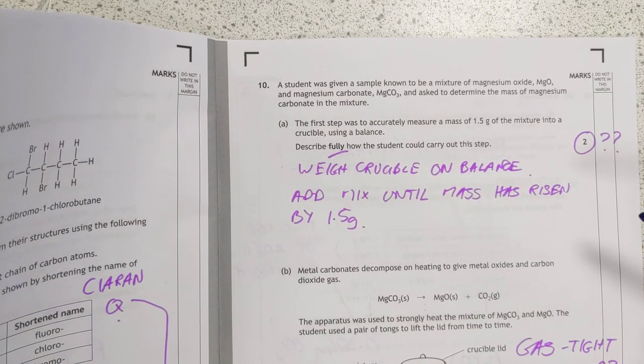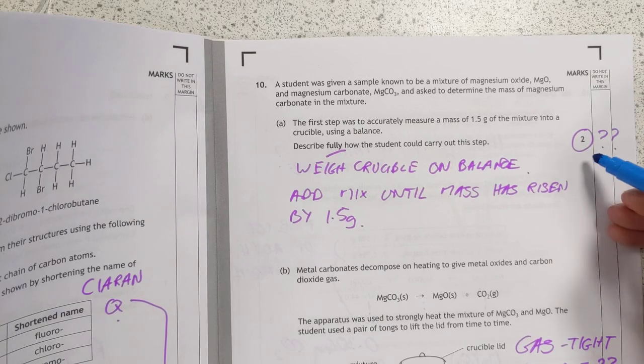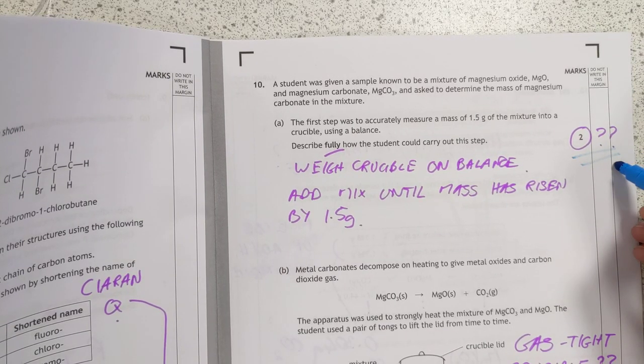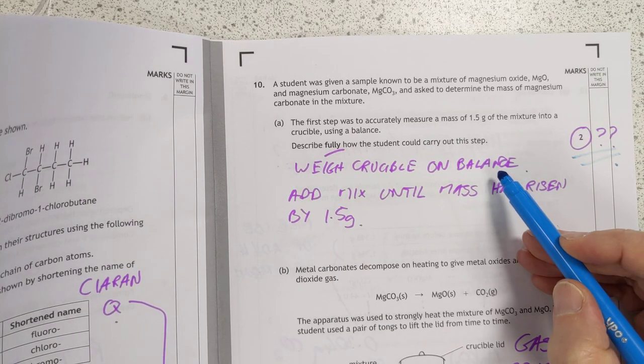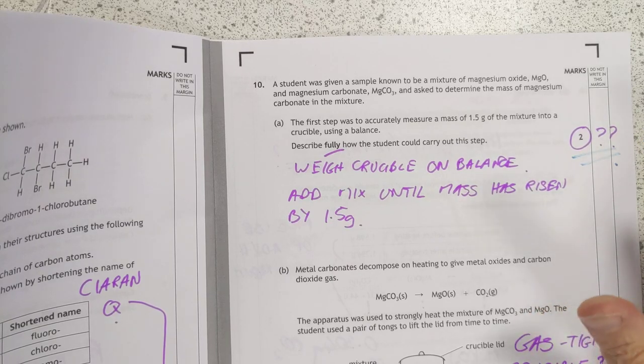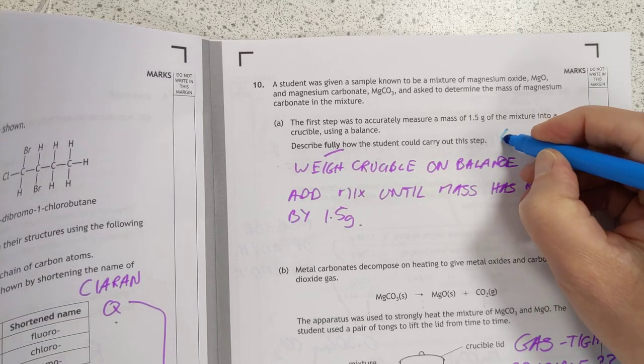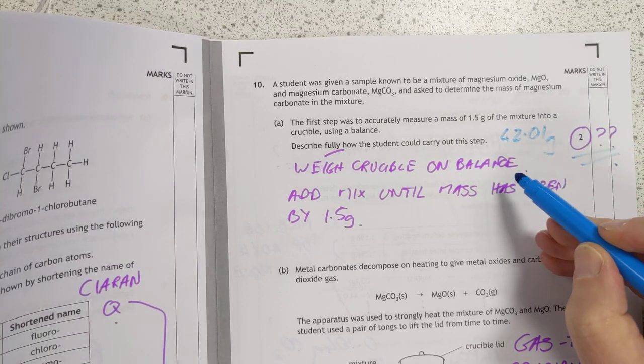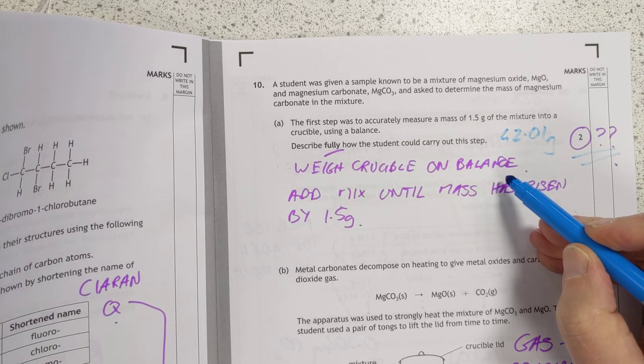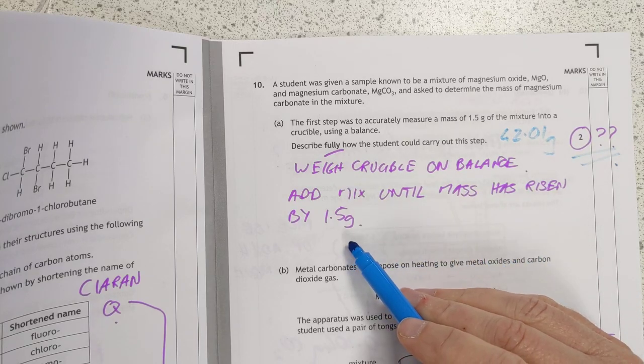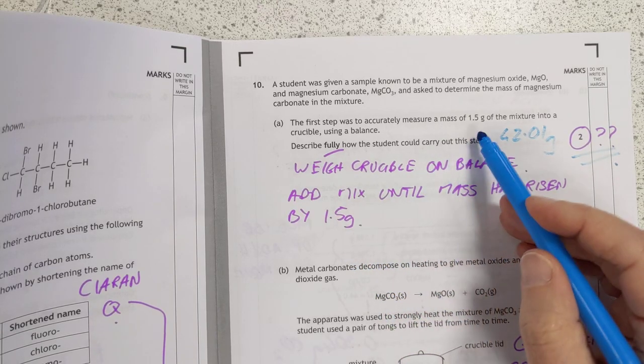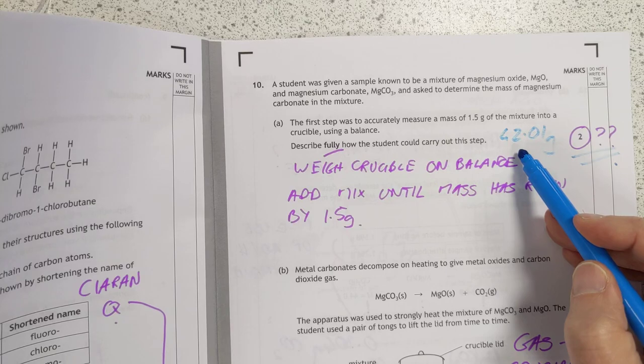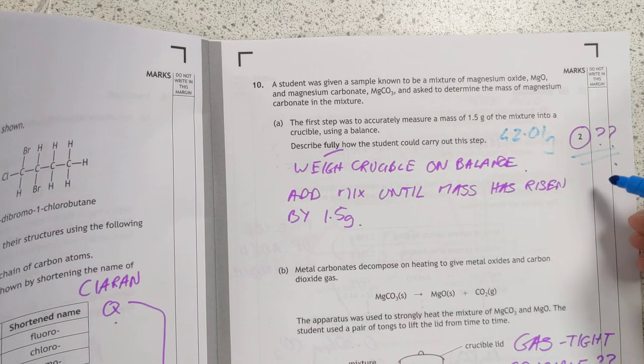Number 10. I'm not sure how to allocate the marks here. You weigh the crucible, as in zero the balance, weigh the crucible, measure the weight, so say 42.01 say grams, and then that's the weight of the crucible. Then you'd add your stuff until you're 1.5 grams heavier than that, so 43.51, and then you're done. But I'm not sure how that's going to be split up for this.